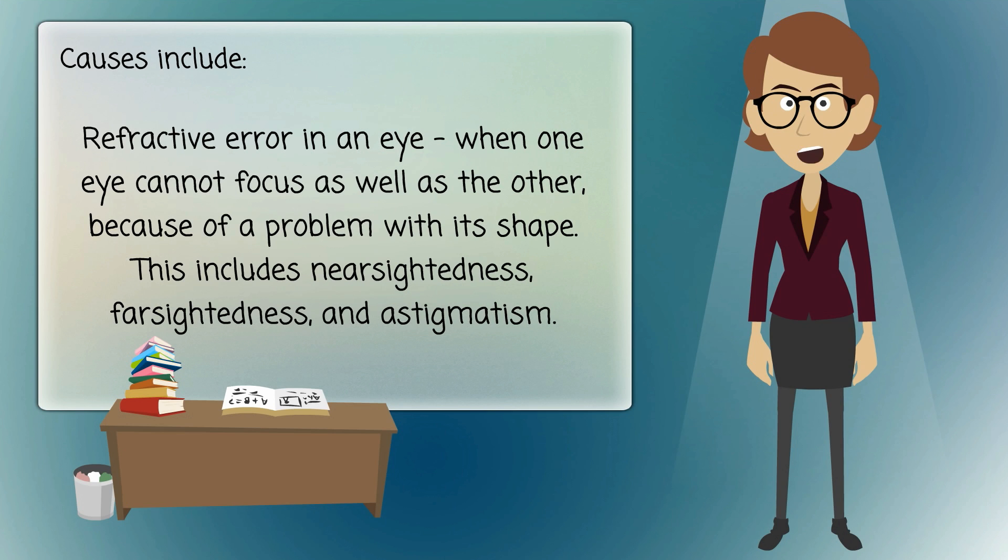Refractive error in an eye, when one eye cannot focus as well as the other because of a problem with its shape. This includes nearsightedness, farsightedness, and astigmatism.